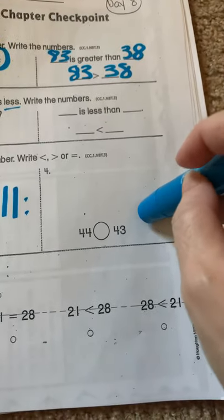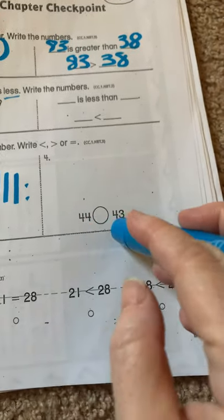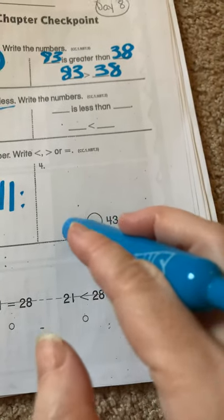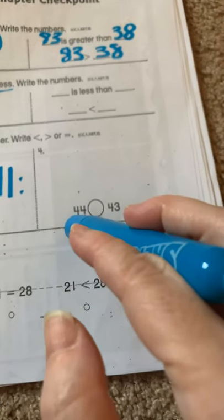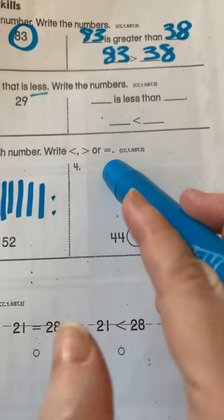Now you guys have to do that same thing for this one. 44, 43. Draw your ten sticks. Draw your ones. Draw your ten sticks. Draw your ones. Then you have to say if it's less than, greater than, or equal to.